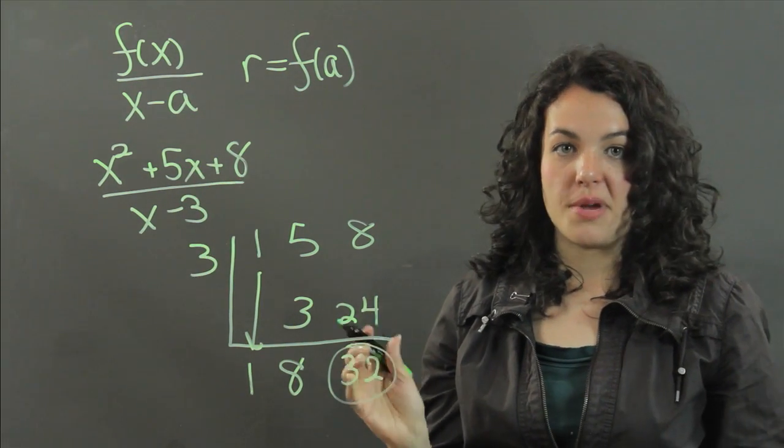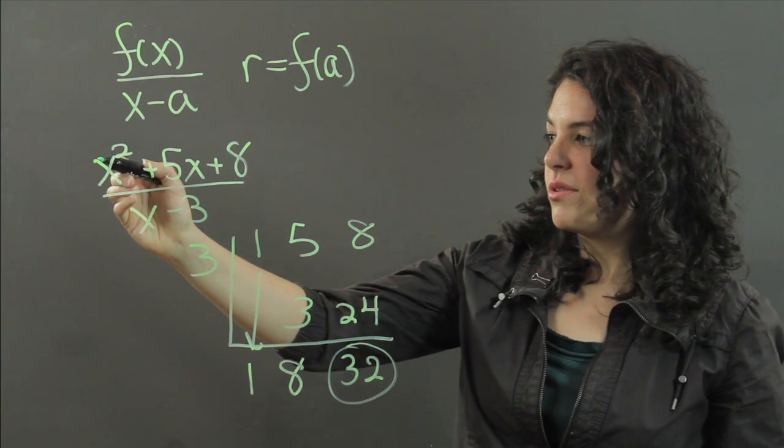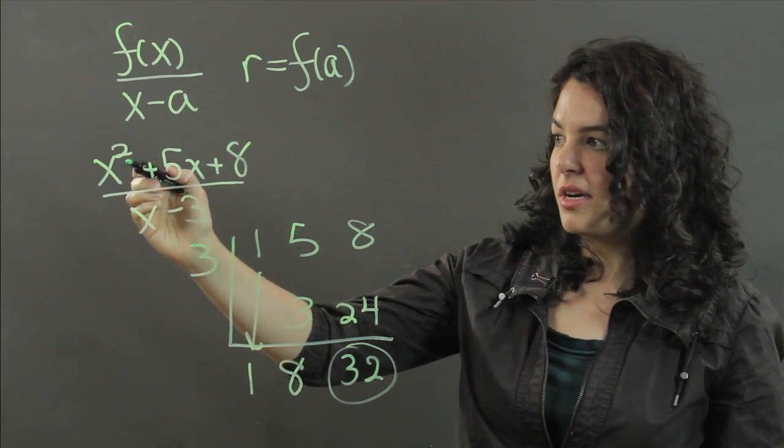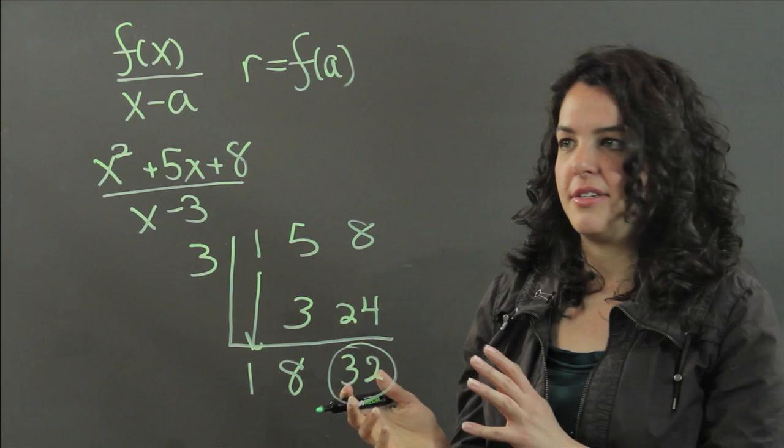According to the remainder theorem, that means that if I evaluate this at a value of x equal to 3, I will get 32. So let's just try that to see that it worked.